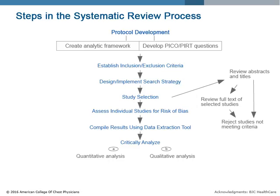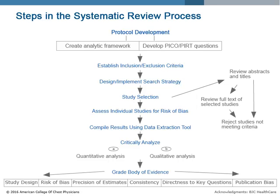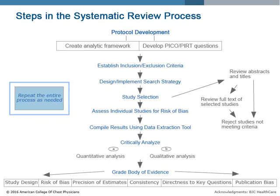Any studies not meeting the criteria for inclusion are rejected. Methodologists then assess the studies for risk of bias and compile results using data extraction tools. The evidence is then critically analyzed either by quantitative analyses, such as meta-analyses, or qualitatively. The entire body of evidence informing the key clinical question is then graded based on study design, risk of bias, precision estimates, consistency, directness to key question, and publication bias. The entire systematic review process may be repeated as needed, for example to look at information for possible harm, cost-effectiveness, or other benefits of the intervention.